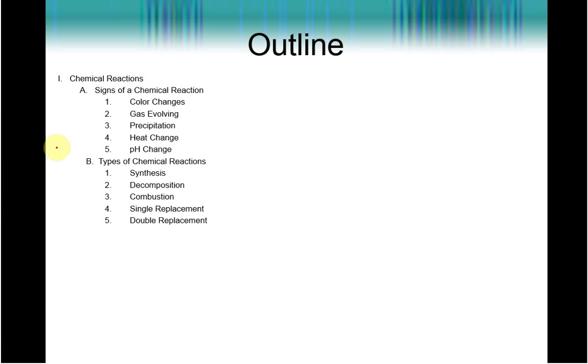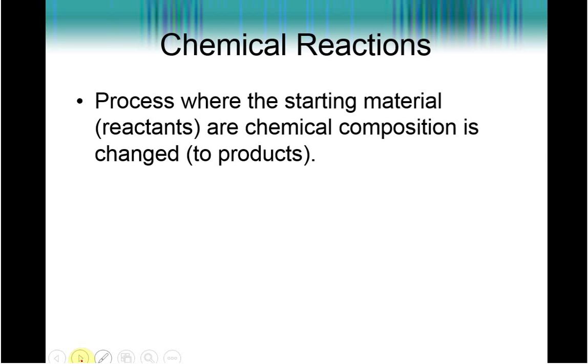As we go through this PowerPoint, we're going to deal first with the signs of a chemical reaction, and then we'll go into the types of chemical reactions that we're going to talk about. Now, remember from unit 3, a chemical reaction is just an equation that represents a chemical change, and that means where we have the starting material or the reactants that are going to be changed into products through some type of alteration of their chemical composition.